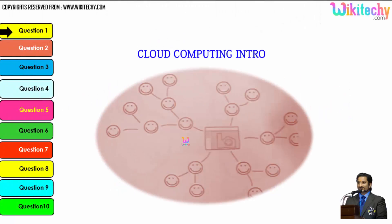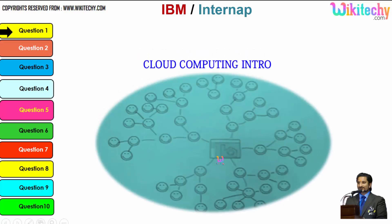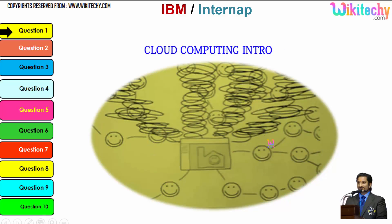Let's talk about the cloud computing intro. Here is a computer connected to a server, and this server is monitoring this computer. Once the network becomes bigger, the monitoring becomes tougher. As more computers are added, the network grows larger and the monitoring system becomes really slow. There is a possibility that the network crashes or the server couldn't monitor specific parts of the network.